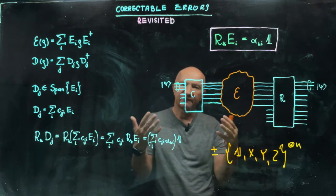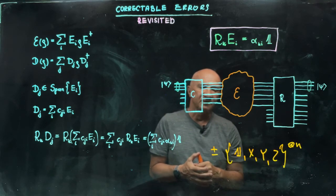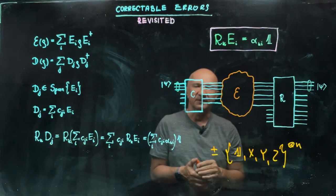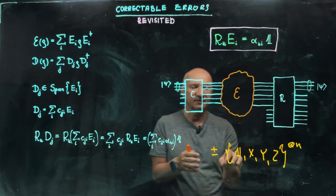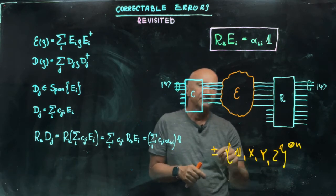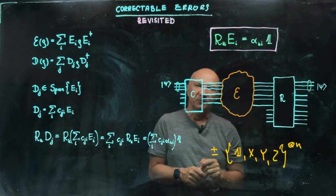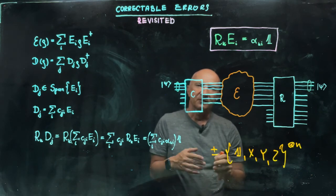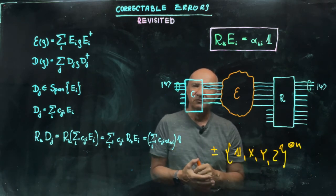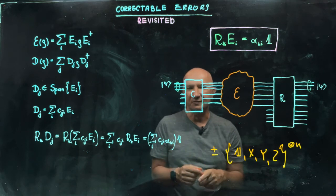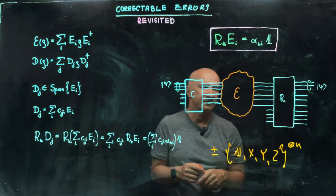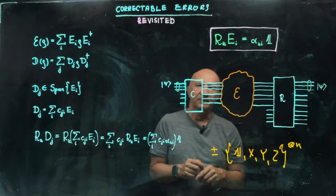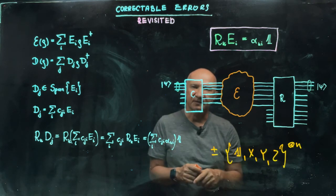So if I have n qubits, the Pauli error on qubits will be given by the Pauli operator, which is an n-fold tensor product of any sequence of the Pauli operators. So those kind of Pauli operators are very convenient because they are Hermitian, and they are also unitary. And they have all kinds of interesting mathematical properties.